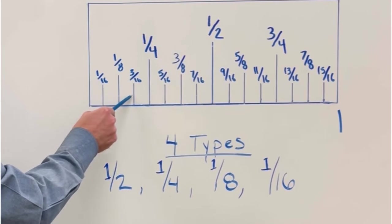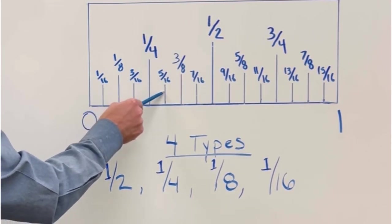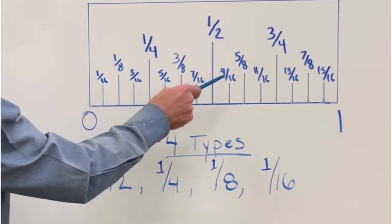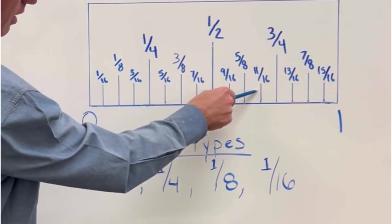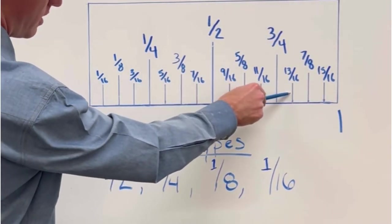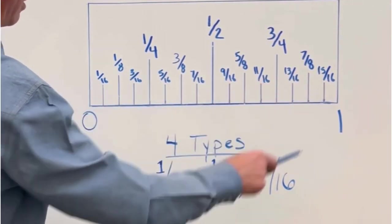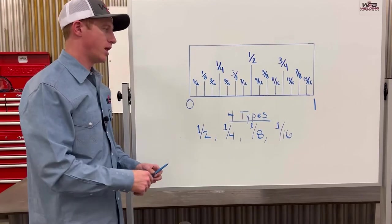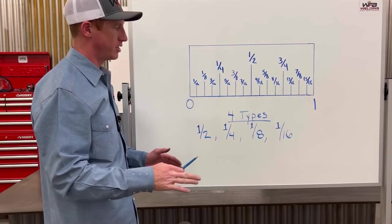So one sixteenth, three sixteenths, five sixteenths, seven sixteenths, nine sixteenths, eleven sixteenths, thirteen sixteenths, and fifteen sixteenths. So that's basically the measurements.